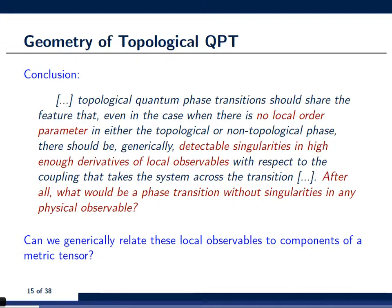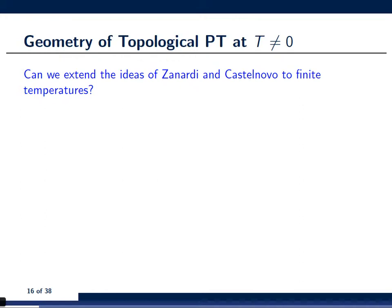And so, what we sort of ask in our research is can we generically relate local observables or susceptibilities to components of a metric tensor? And an even more interesting question is, of course, can we extend the ideas of Castelnovo and Zanardi to finite temperatures? And this is interesting because there are certain models in particular in quantum computation such as a 3D Toric code that experience a topological phase transition at some finite values of temperature. And I've written down here the Hamiltonian of the 3D Toric code for you.